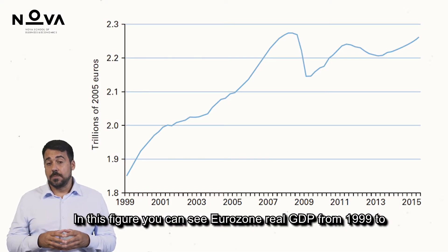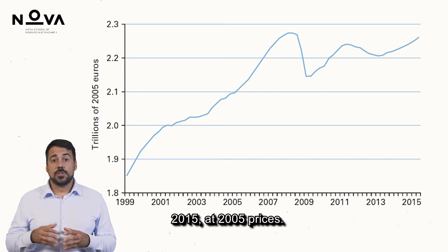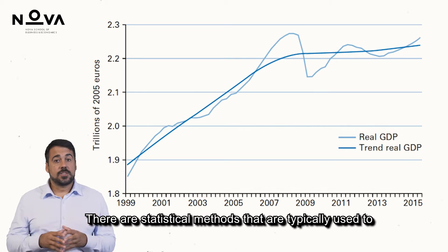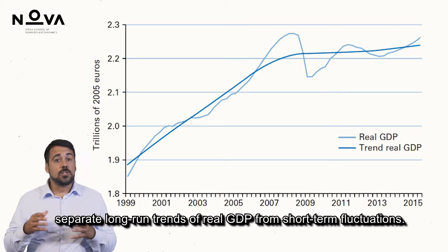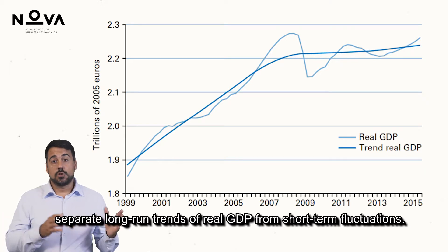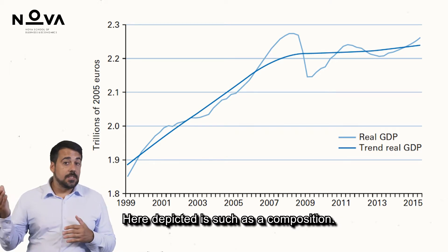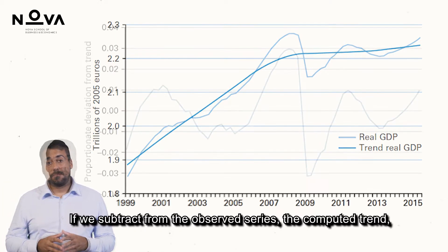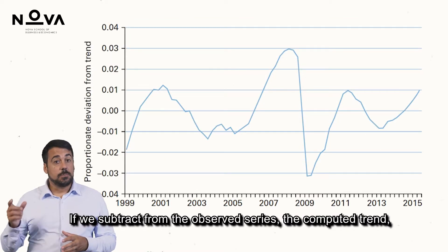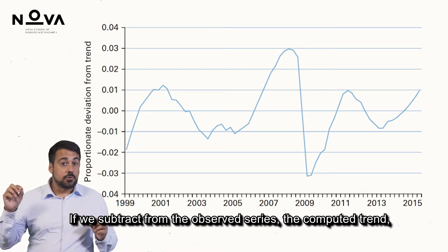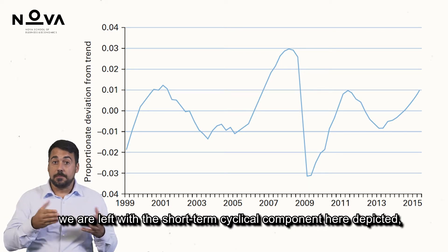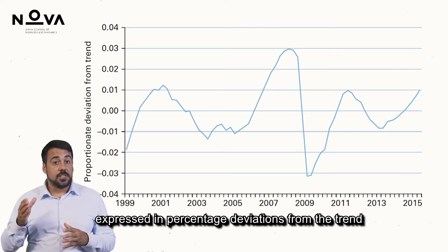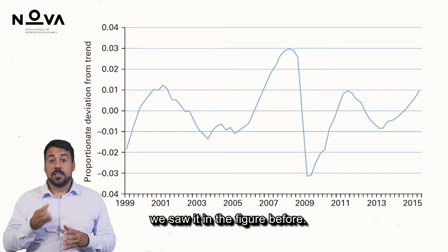In this figure, you can see Eurozone real GDP from 1991 to 2015 at 2005 prices. There are statistical methods typically used to separate long-run trends of real GDP from short-term fluctuations. Here depicted is such a decomposition. If we subtract from the observed series the computed trend, we are left with a short-term cyclical component, expressed in percentage deviations from the trend.